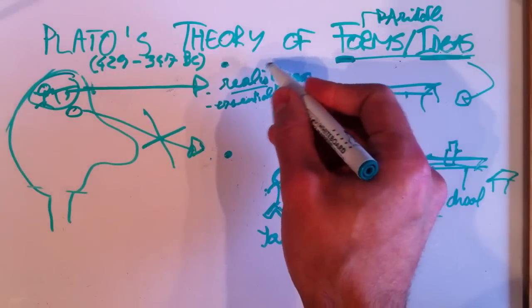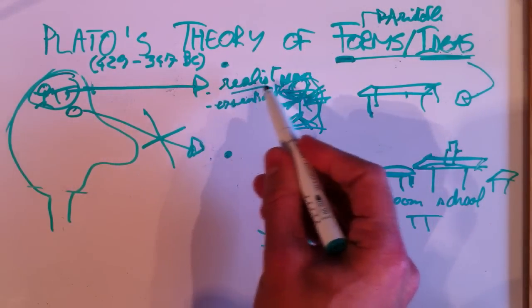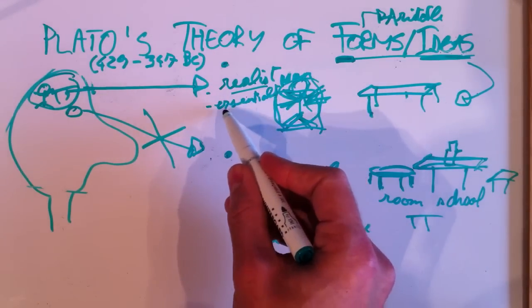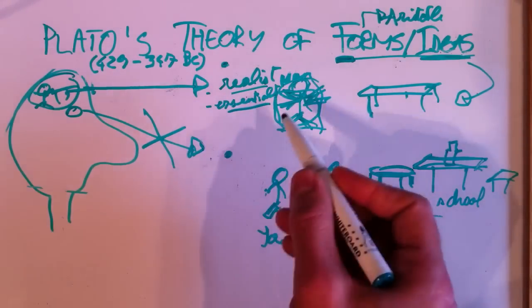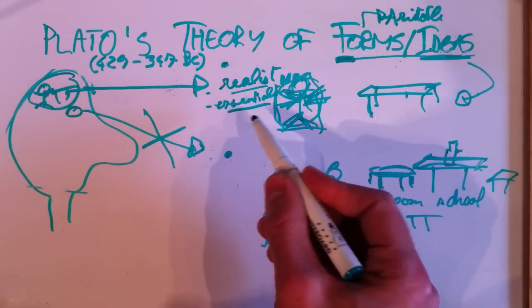Philosophers like to use these words with ISM, right? So, he's not only a realist. He believes that universals are real. He's also an essentialist. He believes that there is something like really existing essences.